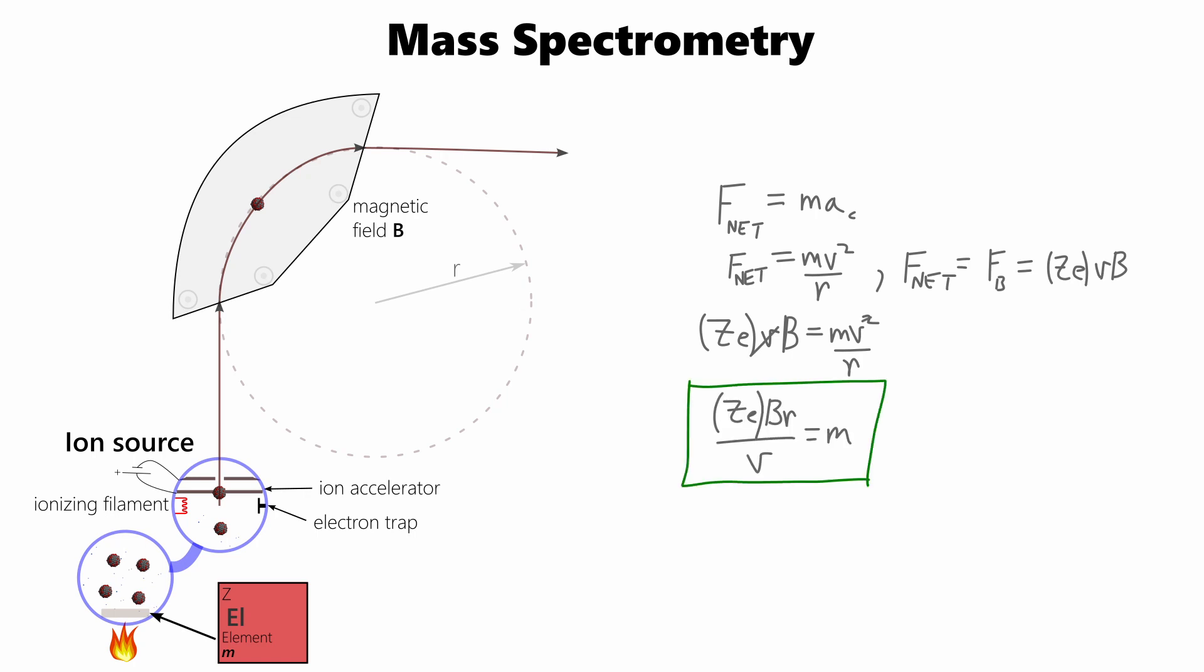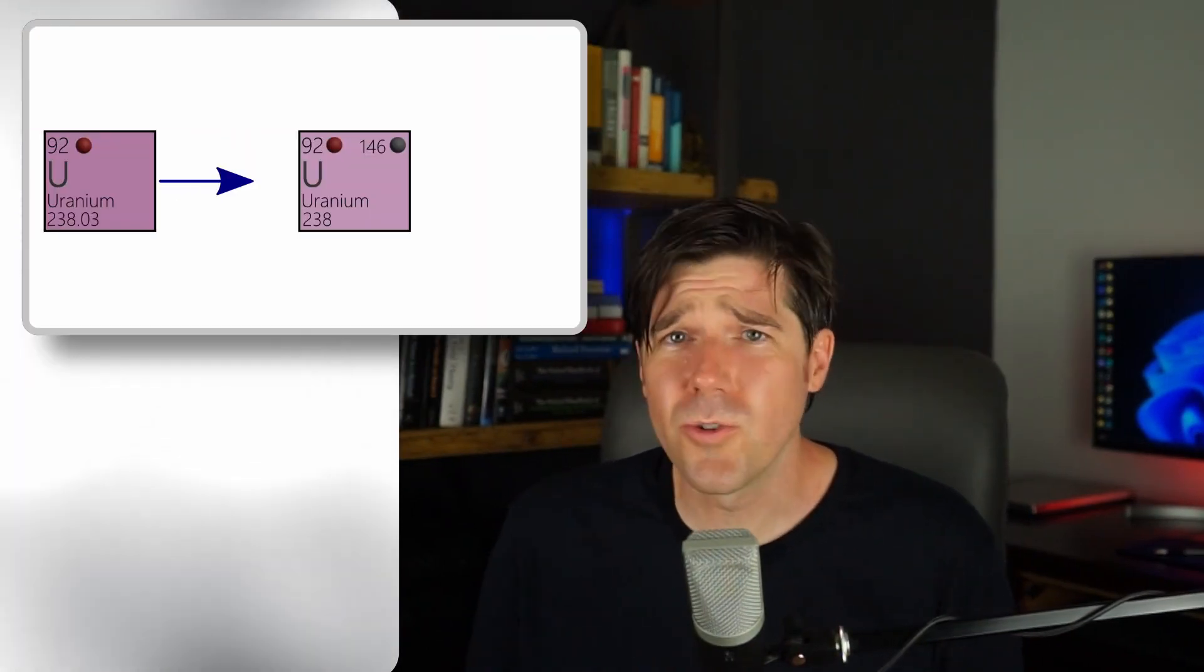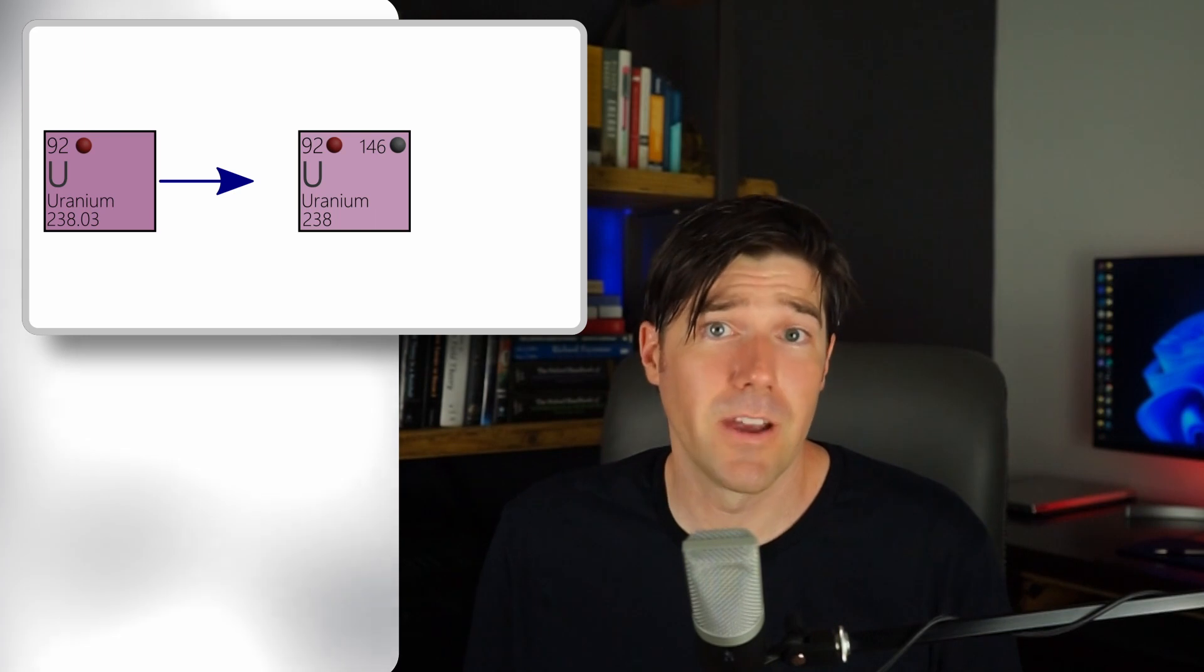The minute details of this aren't entirely important, and we can leave it at that for now. The important thing to note is that the atomic mass is an experimentally determined value. However, there is a catch, and actually several catches. First, as I mentioned before, the number of neutrons within an atom's nucleus can vary.